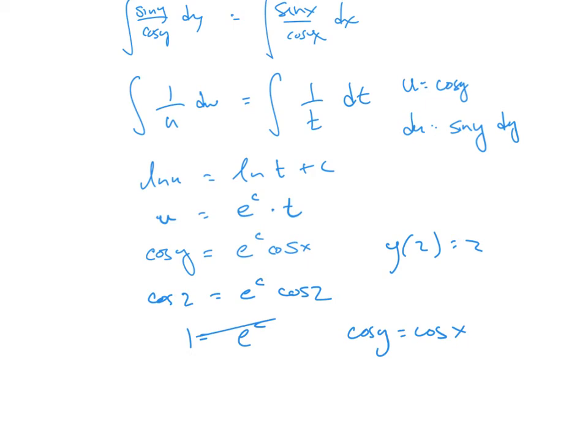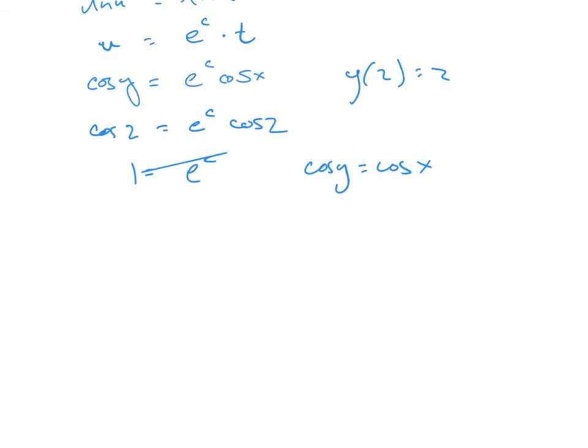So now when I have cosine y equals cosine x, if I think about this, I have to recognize that y and x are angles. And it says that these angles have to be the same. So if those angles have to be the same, I know that y has to be equal to x.